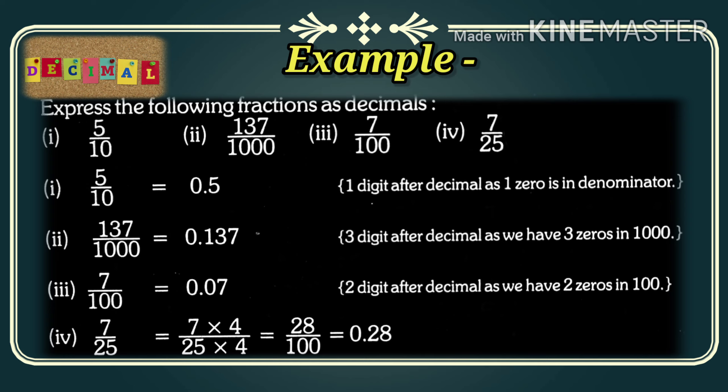Now let's apply rule number 4 when the denominator is not a multiple of 10. We have 7/25. We need to make it a multiple of 100 or 10. We multiply both numerator and denominator by 4: 7 × 4 = 28 and 25 × 4 = 100, giving us 28/100. So the answer is 0.28.